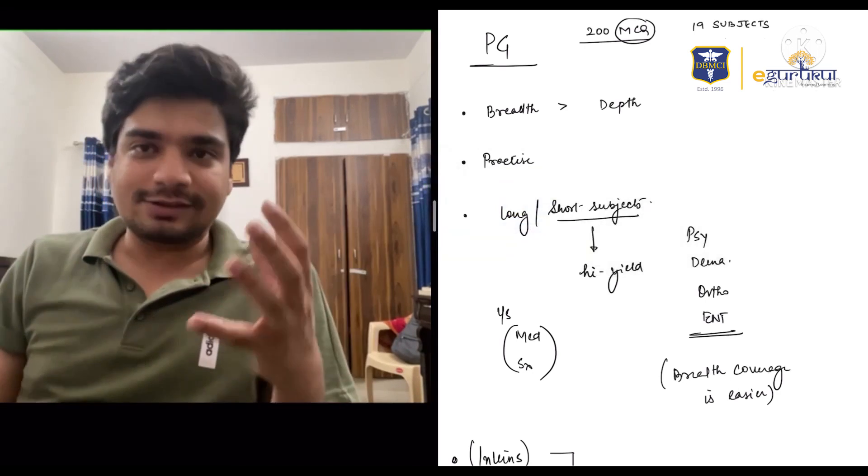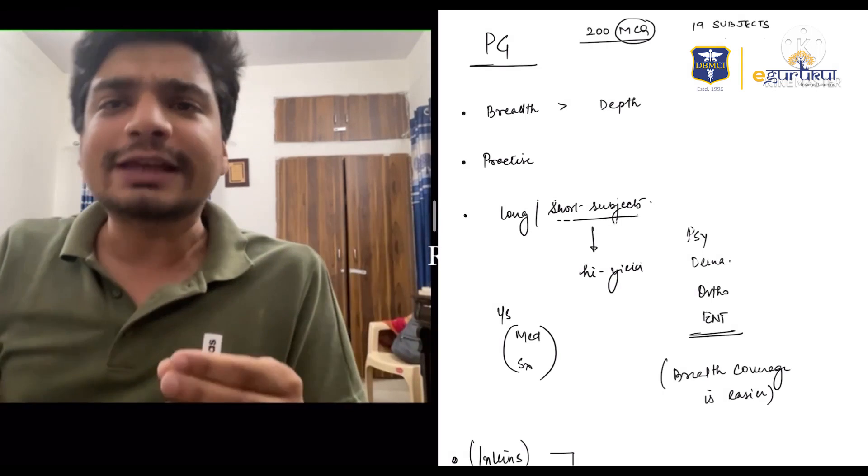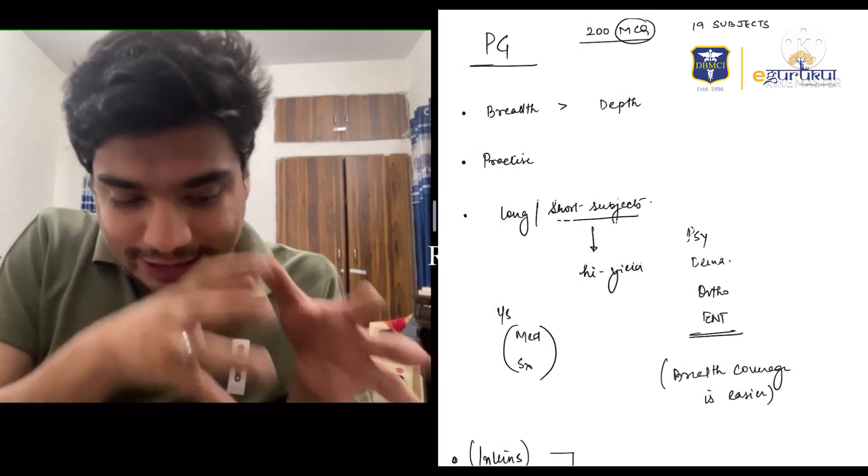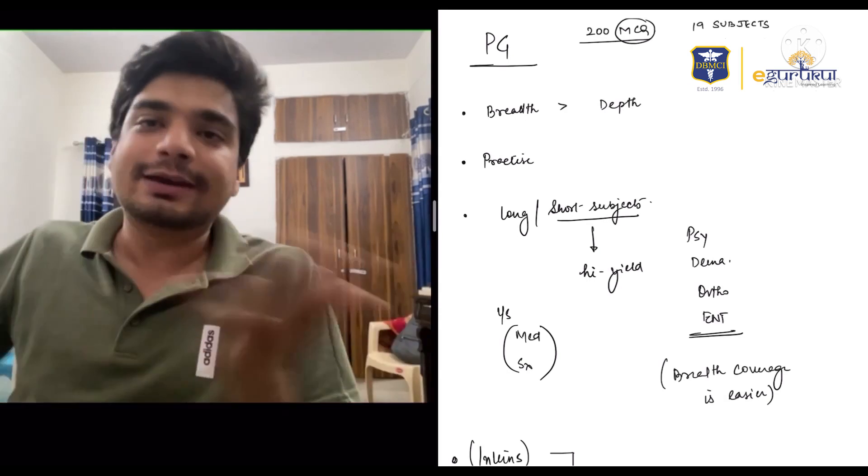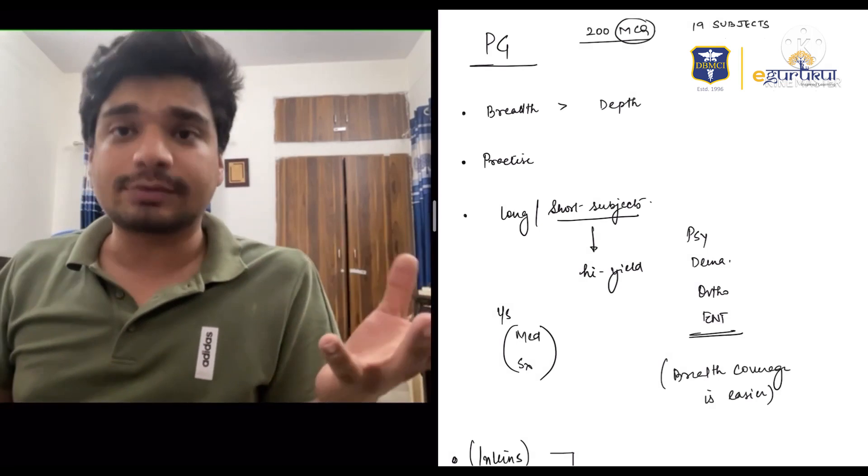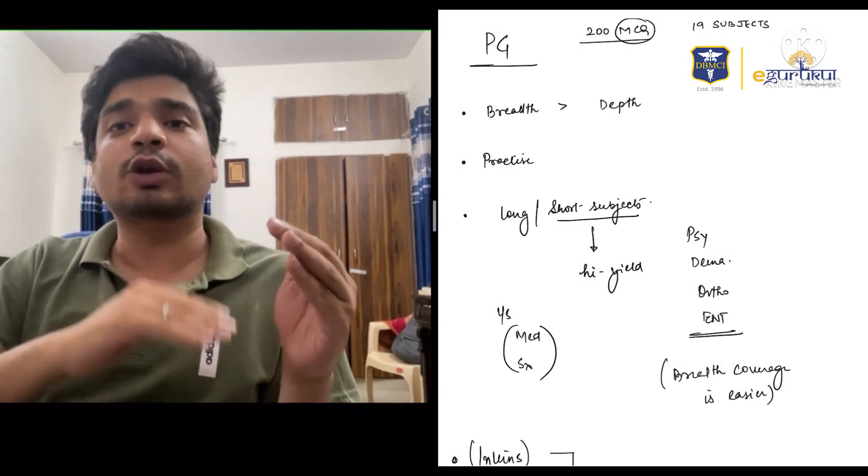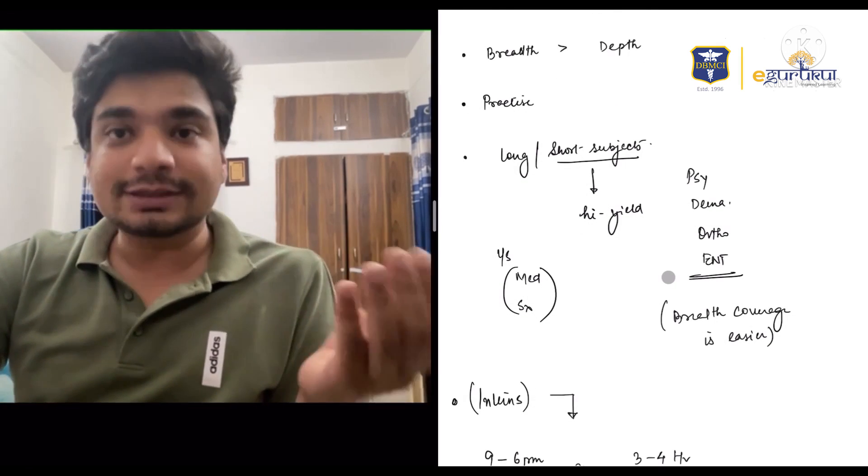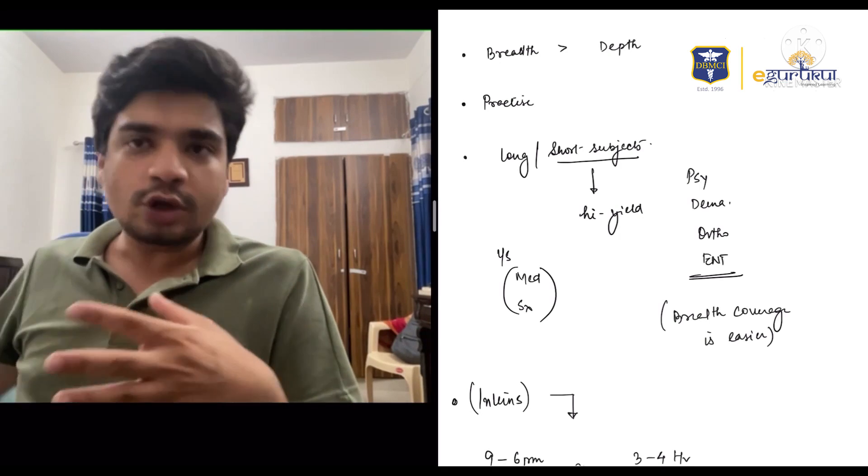PG and Dams, as you all know, is a game of breadth over depth. We should know something about everything rather than depth about one thing. You know one thing about every subject, but the rest is not covered. Because there are 19 subjects and you have to know certain things about each. You should have a basal level knowledge of every subject. This is why short subjects and minors are considered much more high yield because you can actually cover them in depth rather than your long subjects.